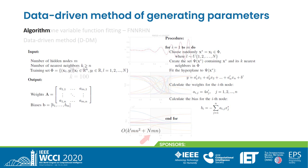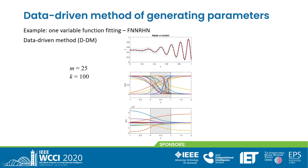Returning to our example: when the data-driven method is used, the sigmoids are distributed inside the input interval and their slopes correspond to the target function's local fluctuations.